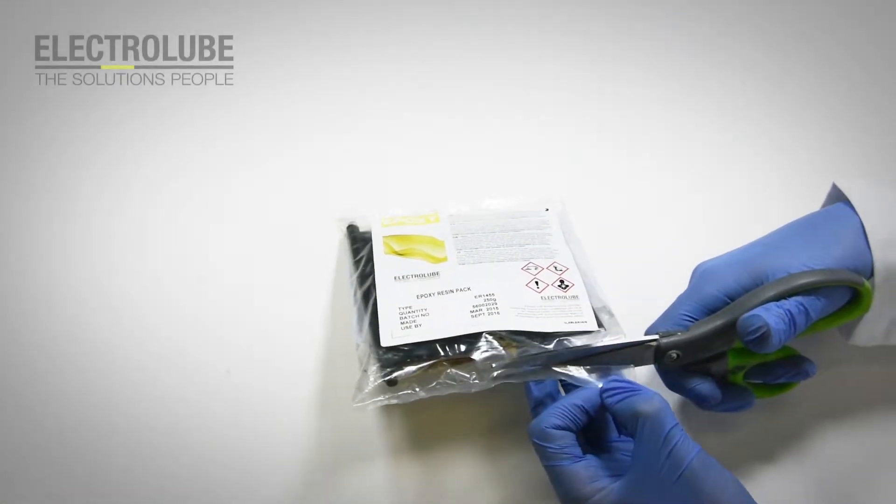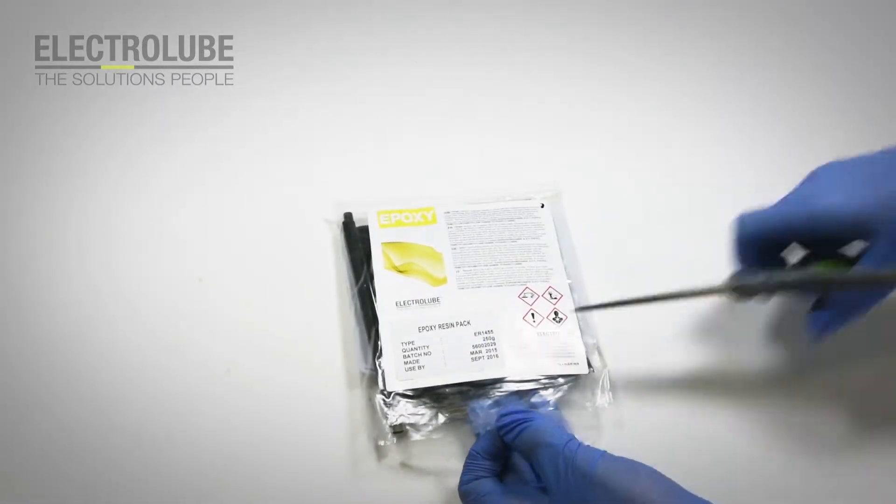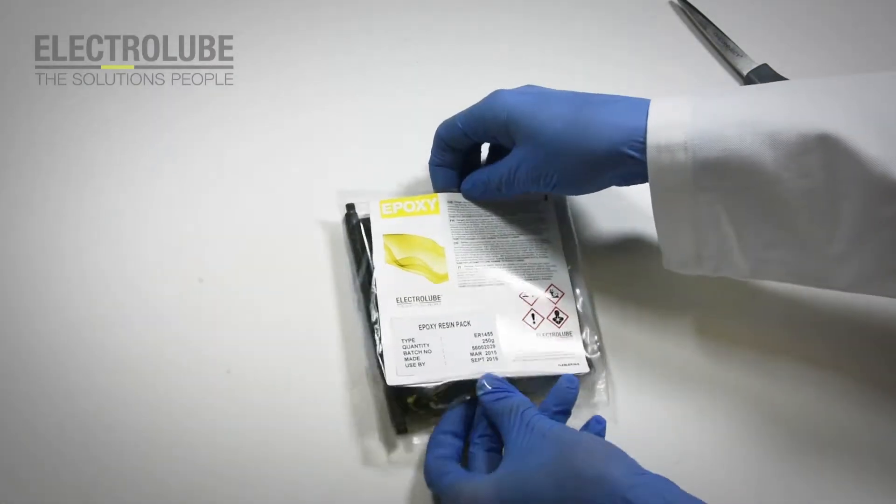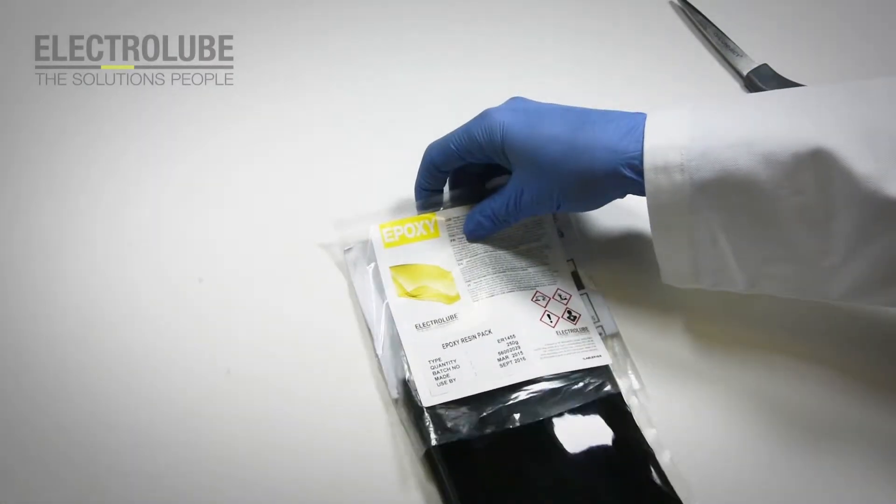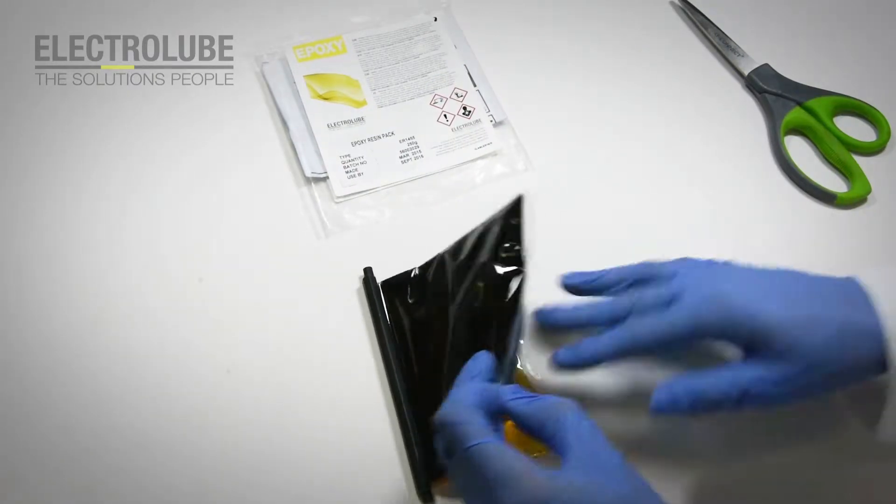Electrolube Epoxy resins are available in a variety of pack sizes and come in pre-measured quantities ready to mix. In this example video we are using a 250g resin pack which has a mix ratio of 2.5 to 1.